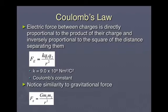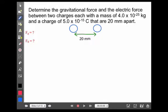Let's look at a math example of both and compare the two forces. Determine the gravitational force and the electrical force between two charges, each with a mass of 4 times 10 to the minus 25 kilograms and a charge of 5 times 10 to the minus 15 coulombs, and they are 20 millimeters apart. First, a quick conversion: 20 millimeters is 0.02 meters — it has to be in standard units.